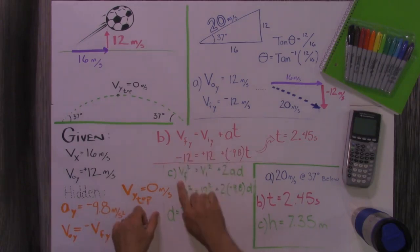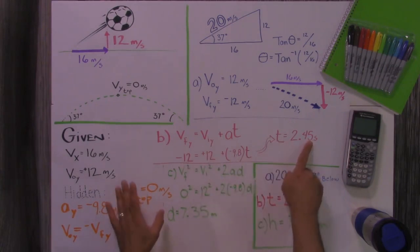Put it into this formula. Well, I know the initial velocity. I know the final velocity. And I know the acceleration in the Y direction. That's gravity. Plugged it in. Got a time of 2.45 seconds.